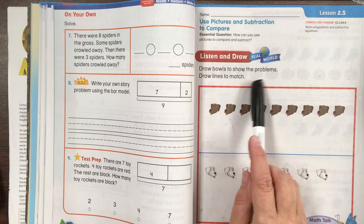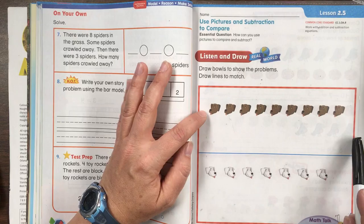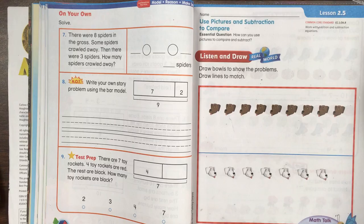Listen and draw. Draw bowls to show the problem, draw lines to match. So let's look up here with these nine brown dogs. There are nine brown dogs. There are five bowls. How many more dogs need a bowl?